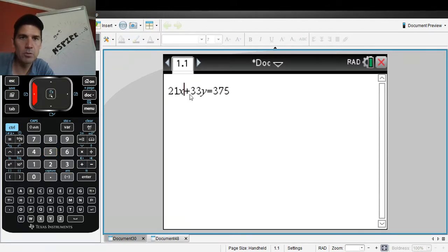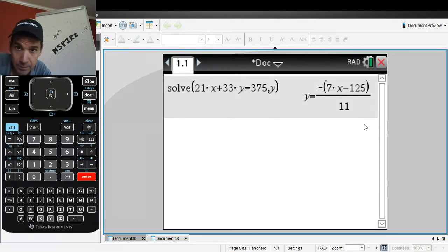And so what I'm going to do is I want to solve this in terms of Y. So I'm going to scroll back over here and type in solve this equation. Now you have to do comma Y because you want to solve it in terms of Y. So now I have basically a function right there. Now I want to store that as my F1 of X.